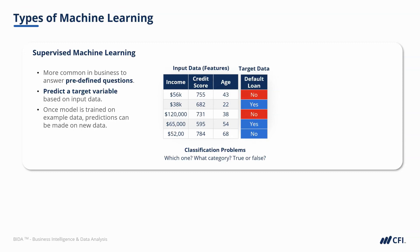Our earlier example of transaction fraud was an example of classification. We might identify transactions as low, medium, or high risk of fraud.